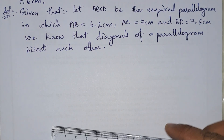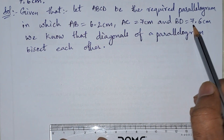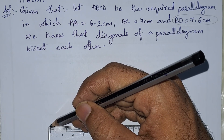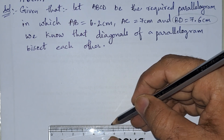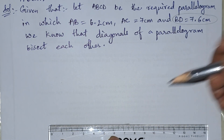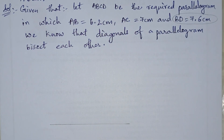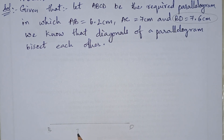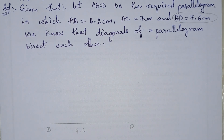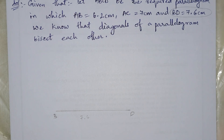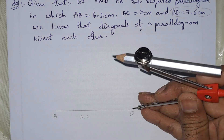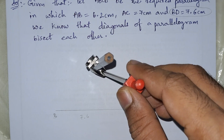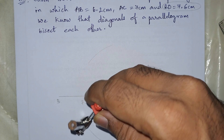First, we will draw diagonal BD of length 7.6 centimeters. Then we need to draw a perpendicular bisector of BD, since we know the diagonals bisect each other.